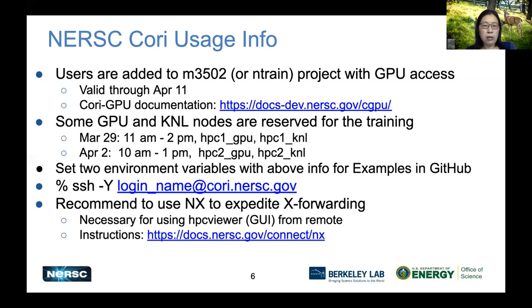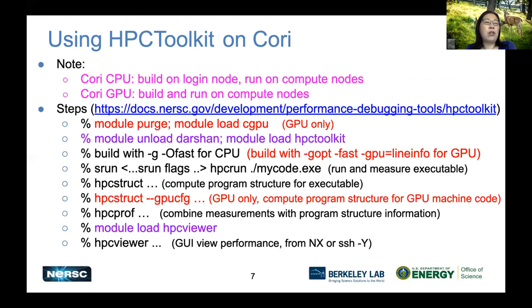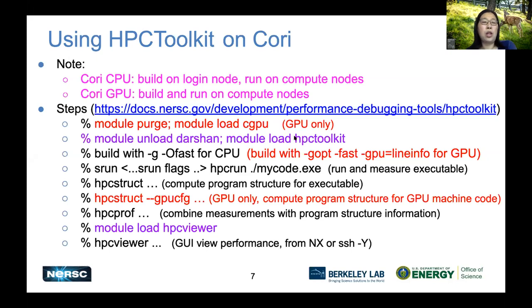Here is a brief overview of using HPCToolkit on Cori. For CPU, you would build on the login node and run on compute nodes. For GPU access, all software must be built directly on the compute nodes and run there as well. For CPU and GPU, you would load the HPCToolkit module. For GPU, you first load the CGPU module to expose the audit modules available on GPU. Then build with -g along with optimization flags, like -fast on CPU. For GPU using the NVIDIA compiler, we recommend -gopt so that you retain all your other optimization flags. GPU line info is needed to get detailed information on GPU.